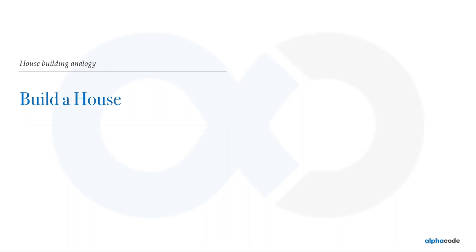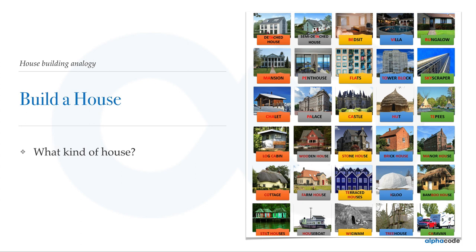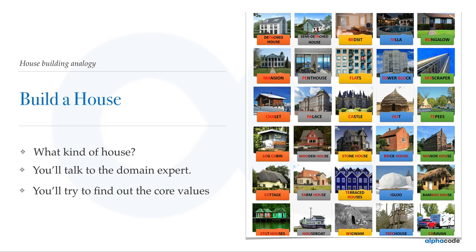Let's take a simple example. Suppose you are a civil engineer asked to build a house. Your first question will be: what kind of house do you want? The owner says he needs a farmhouse. Your next move is to talk to a domain expert. A domain expert is not a job title — it's simply someone who has a lot of knowledge about that domain. As a civil engineer, you know how to build infrastructure but you don't know what features a farmhouse requires, so you talk to the domain expert, which might be the owner himself.